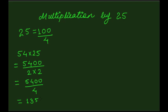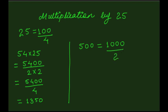Once you understand this trick, you can apply it to multiply any number by the multiples of 5. For example, to multiply any number by 500, remember the trick that 500 means 1000 divided by 2. So we'll simply add 3 zeros to the right of the given number and then halve it.